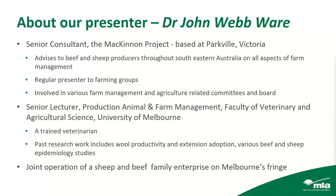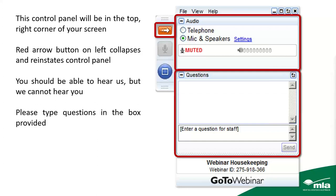Before we get into it and hand over to John, I'll just go through our control panel. You can minimize the screen using the arrow here. You won't be able to verbally ask any questions, but you can type your questions. At the end of the webinar, if you have to log off early, it will be recorded so you can go back to it. Please complete the exit survey, and if you've got any technical difficulties or want to ask questions, use the questions and chat function.